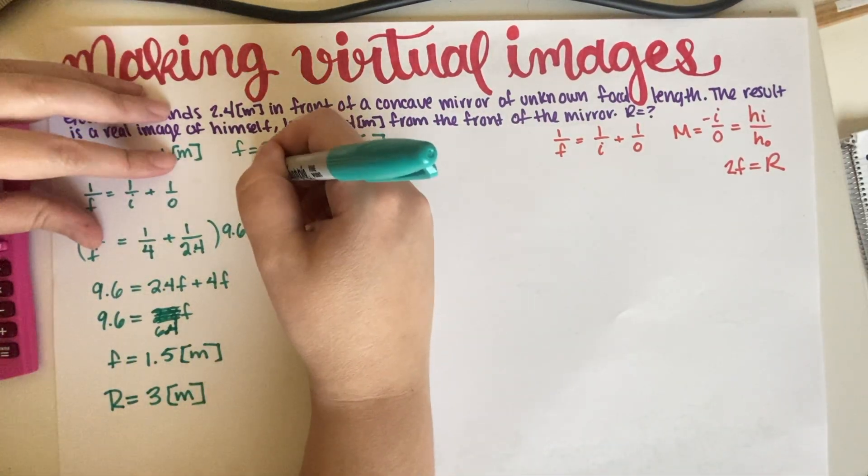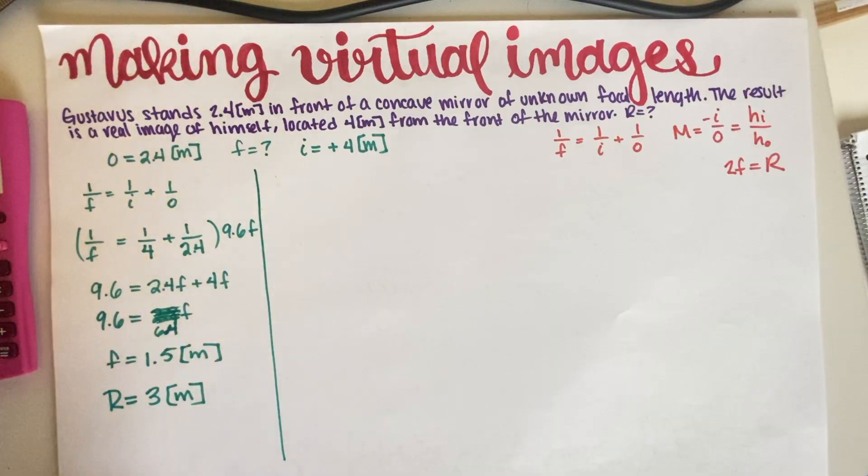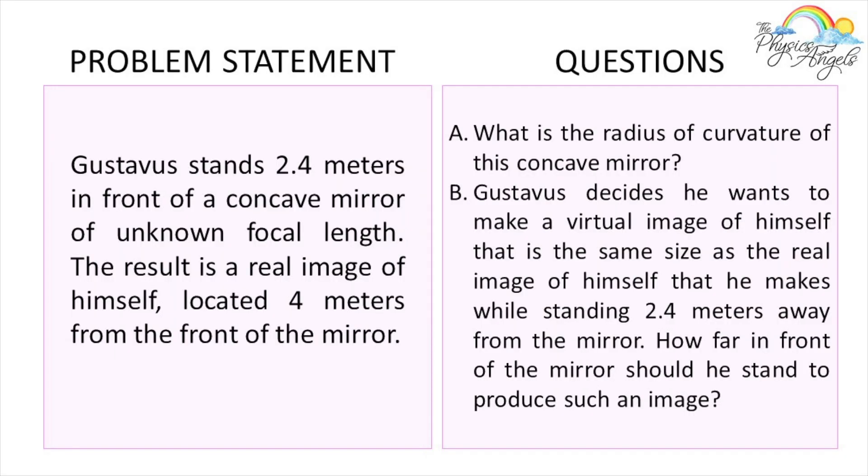Okay. So now for part B of the problem. I'm just going to put it on the screen. Gustavus decides he wants to make a virtual image of himself that is the same size as the real image of himself that he makes while standing 2.4 meters away from the mirror. How far in front of the mirror should he stand to produce such an image?